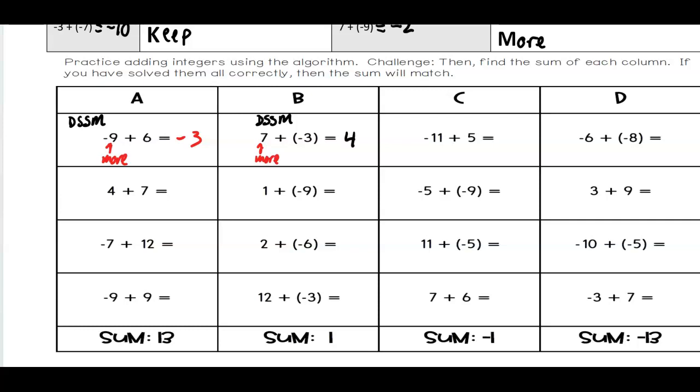Negative 11 plus five. That again is a DSSM. I have more negatives, excuse me. So my answer is going to be negative and 11 minus five is six. So my answer is negative six.